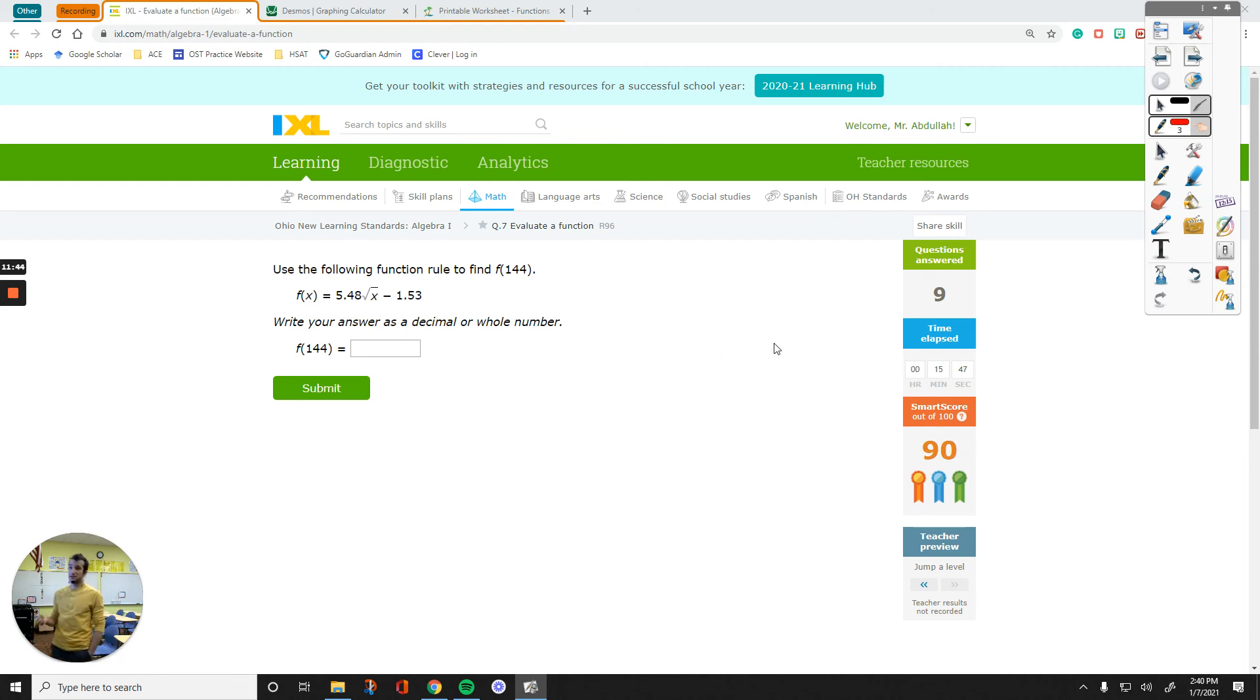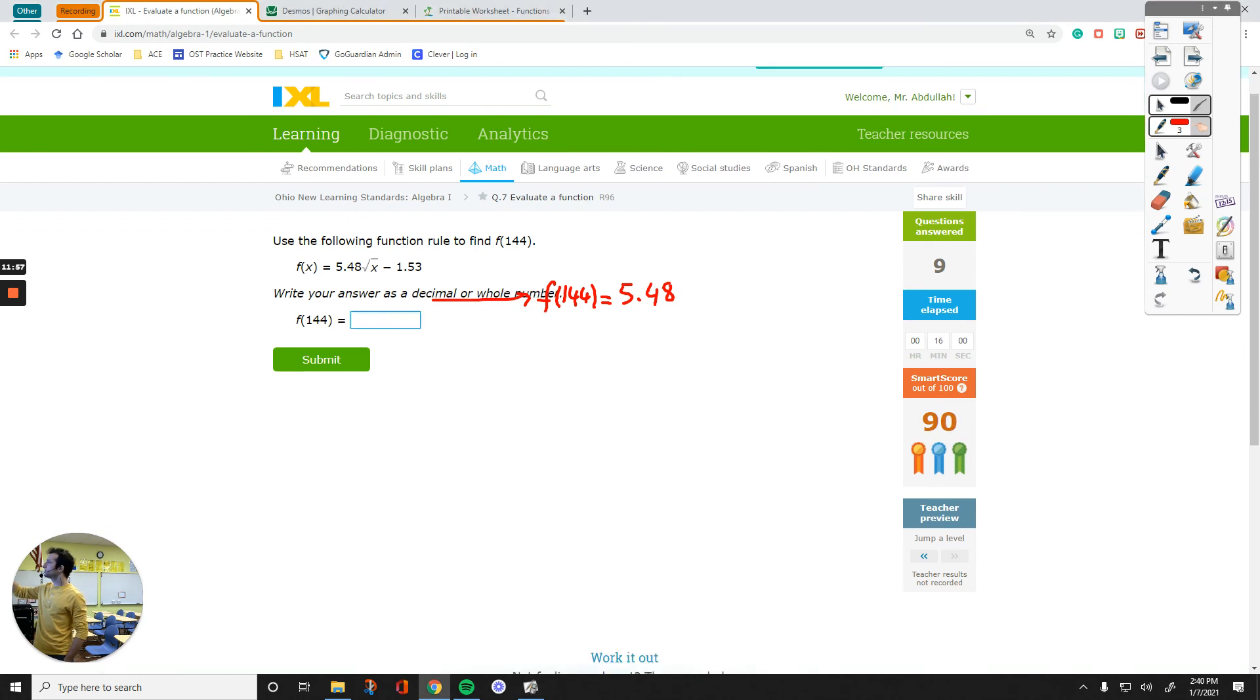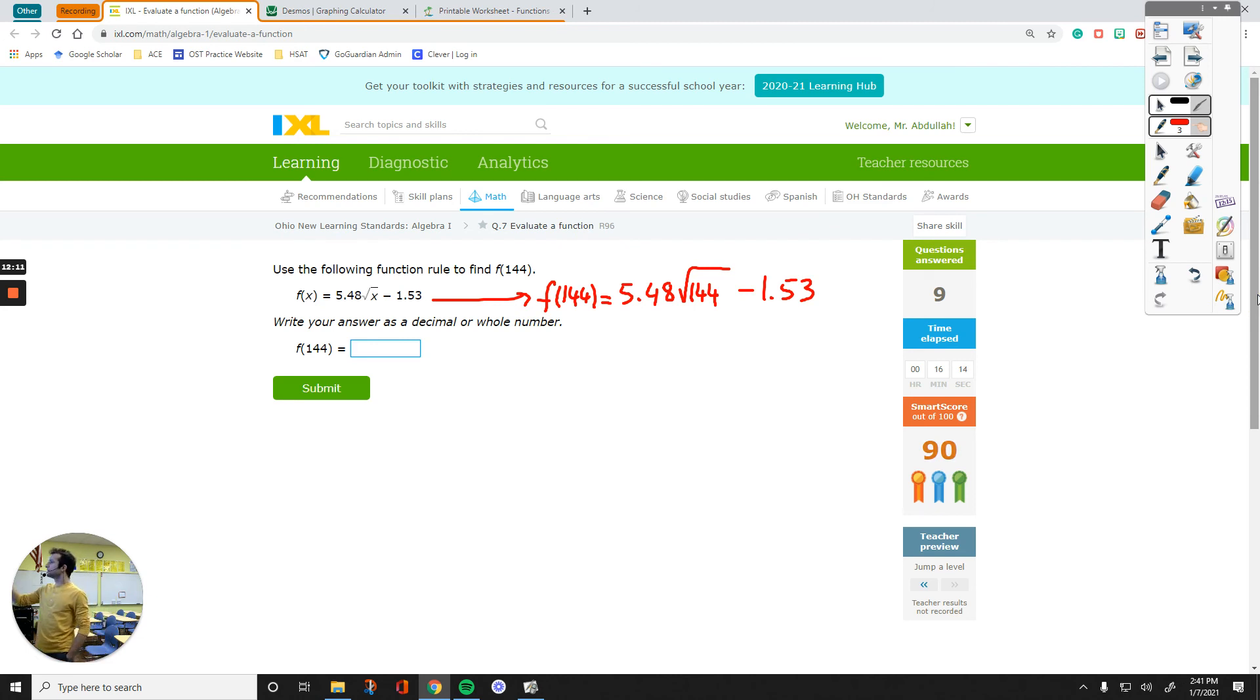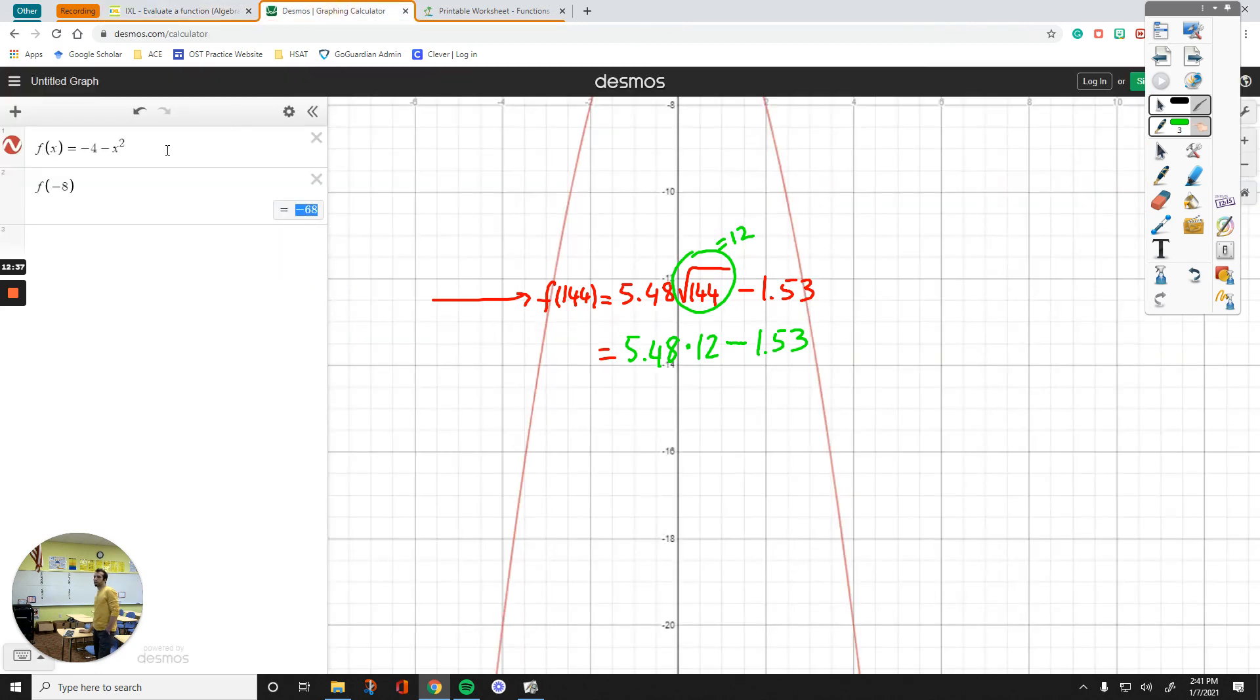Let me show you this one as well. It's not hard again. So, let's rewrite the whole thing. F of 144 because that number is my X now. 5.48 times square root of 144. X becomes 144 minus 1.53. Now, let's scroll up a little. Let's just talk about this first. 5.48 times square root of 144. This equals to 12. So, basically, it wants us to multiply 5.48 by 12 and then subtract 1.53. Let's just do it over here. 5.48 times 12 minus 1.53. 64.23.